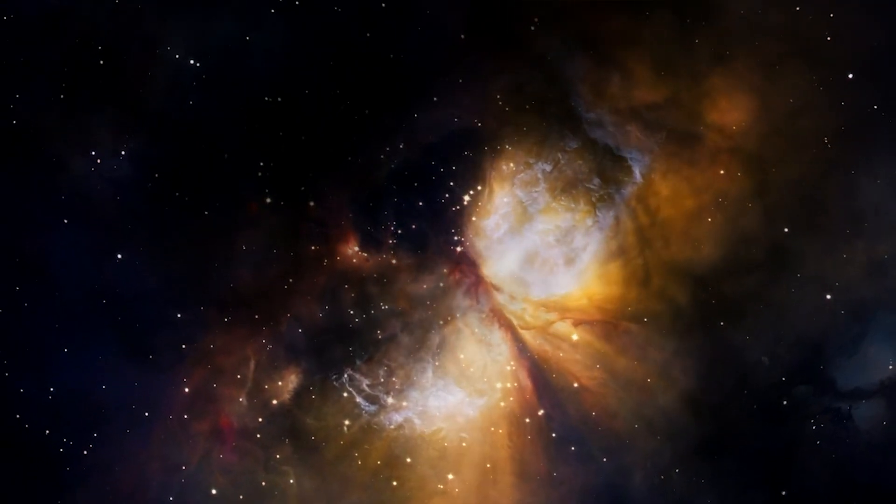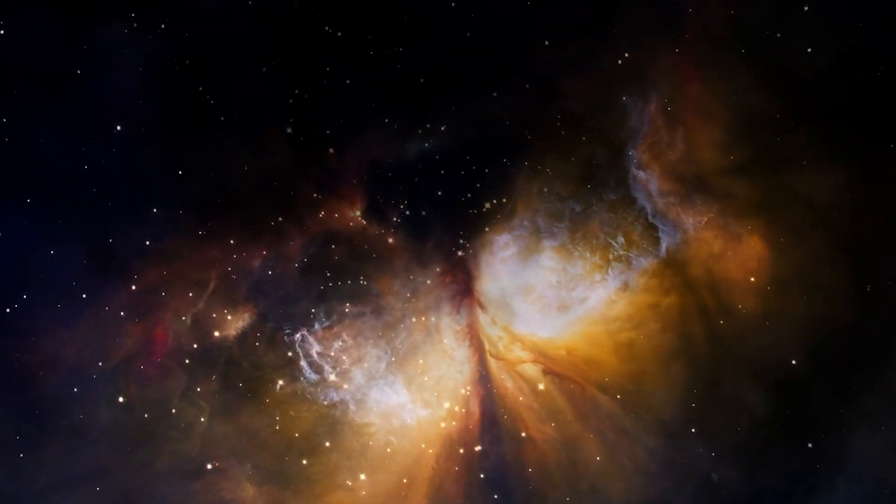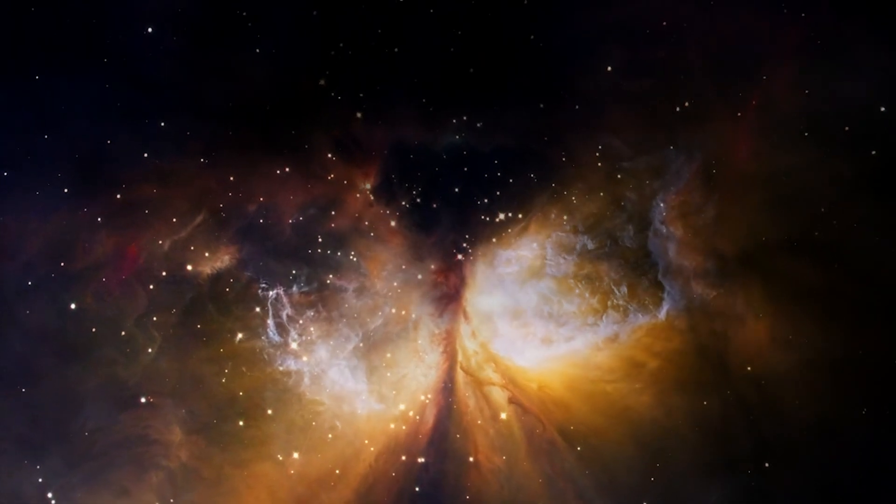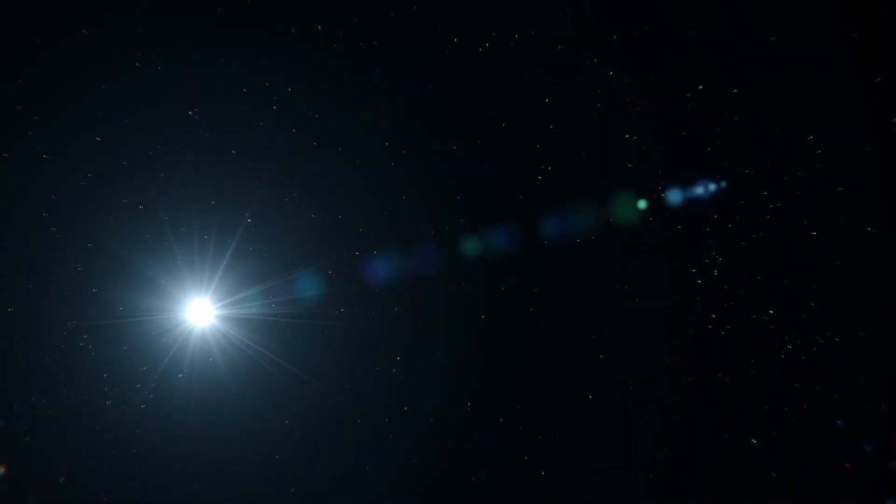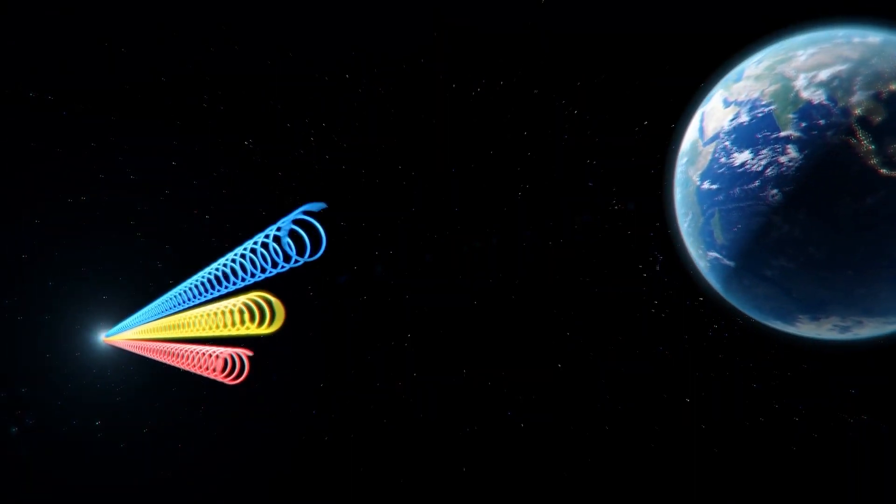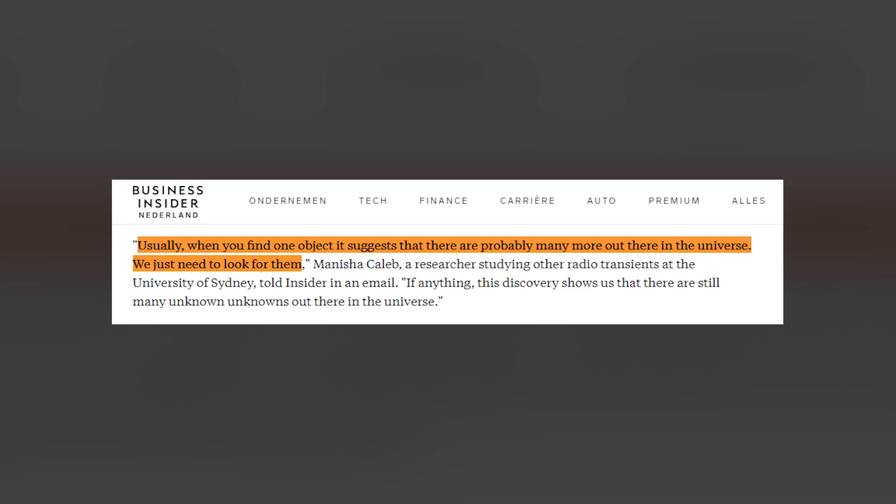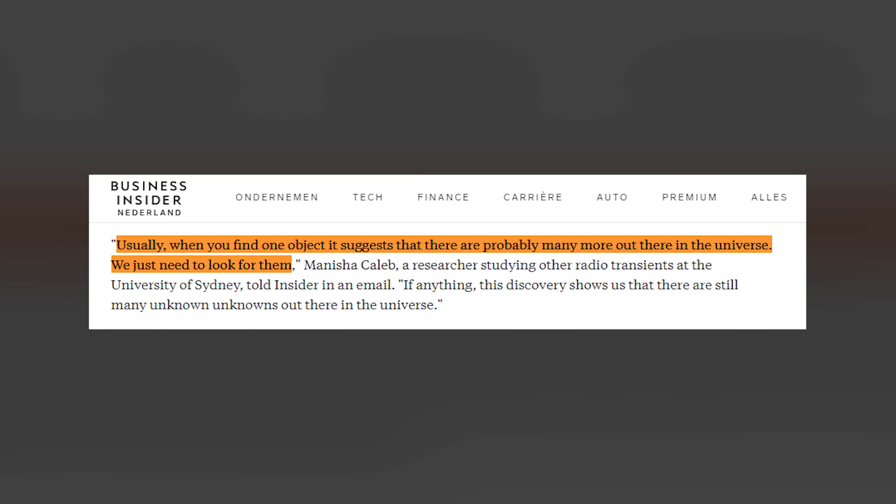In their paper, the Australian researchers write that their nearby spinning object resembles one of these GCRTs which emitted a radio signal every 10 minutes. Another group of mysterious transients called fast radio bursts comes from other galaxies. Usually when you find one object, it suggests that there are probably many more out there in the universe. We just need to look for them.